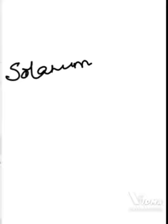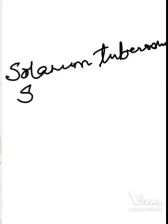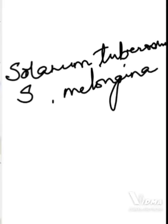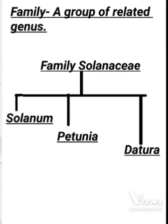Let's take one example from plants: Solanum tuberosum and Solanum melongena. These are two plant species — Solanum tuberosum is potato whereas Solanum melongena is eggplant, that is brinjal. They also have some similarities in their floral and morphological structure, and that is why these two plant species are also placed in the same genus.